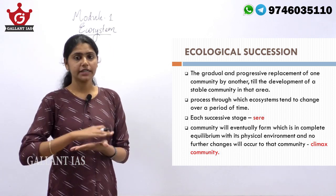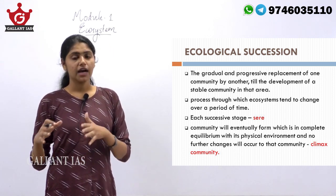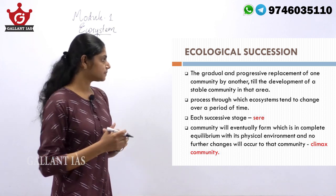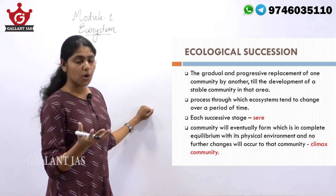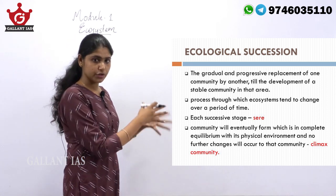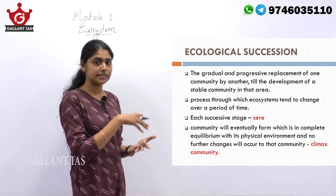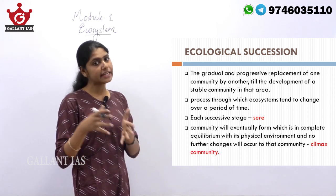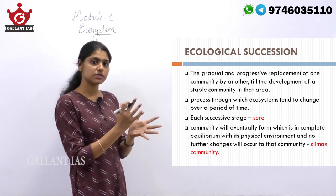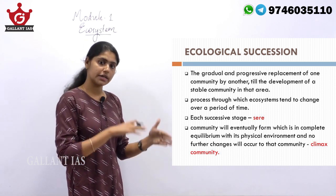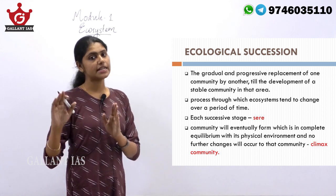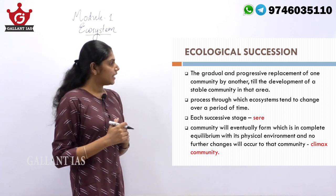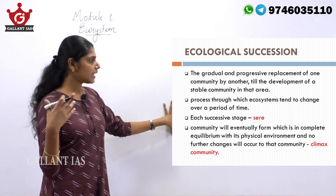Ecological succession is the slow and progressive replacement of one community of organisms by another community, continuing until a stable community is formed that is in equilibrium with the environment. The process of gradual replacement of one community by another is termed ecological succession, where successively this process keeps developing.